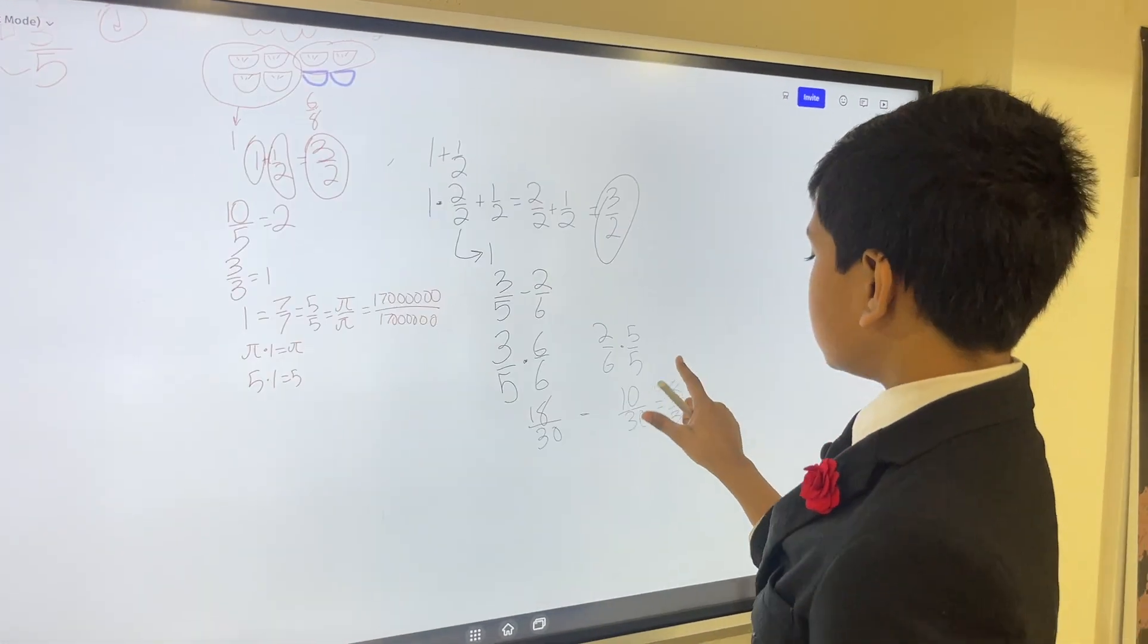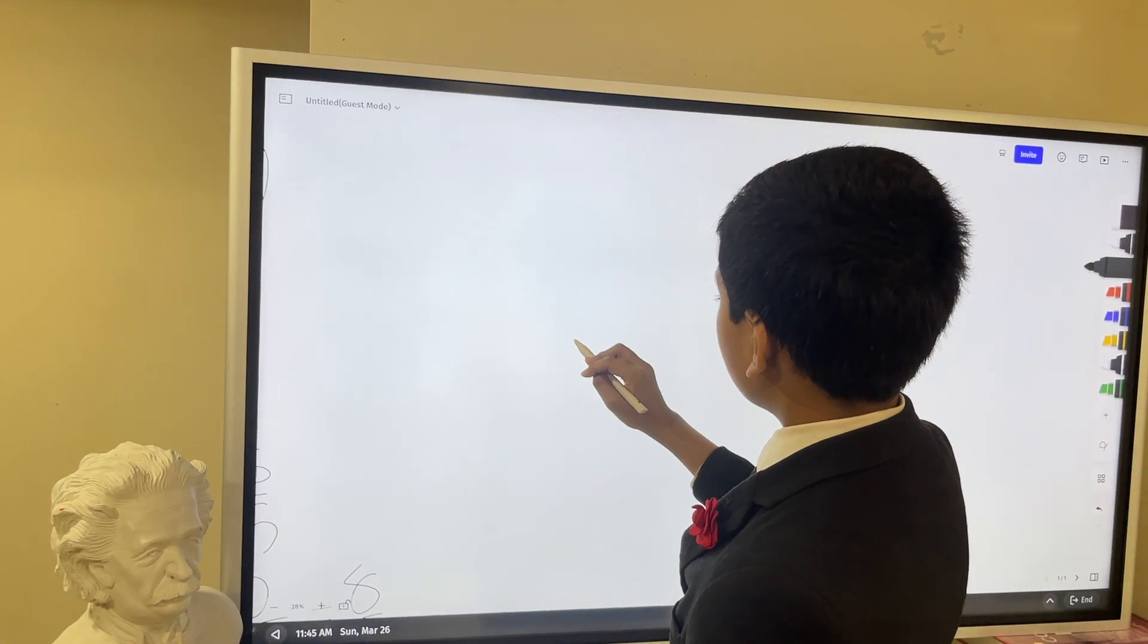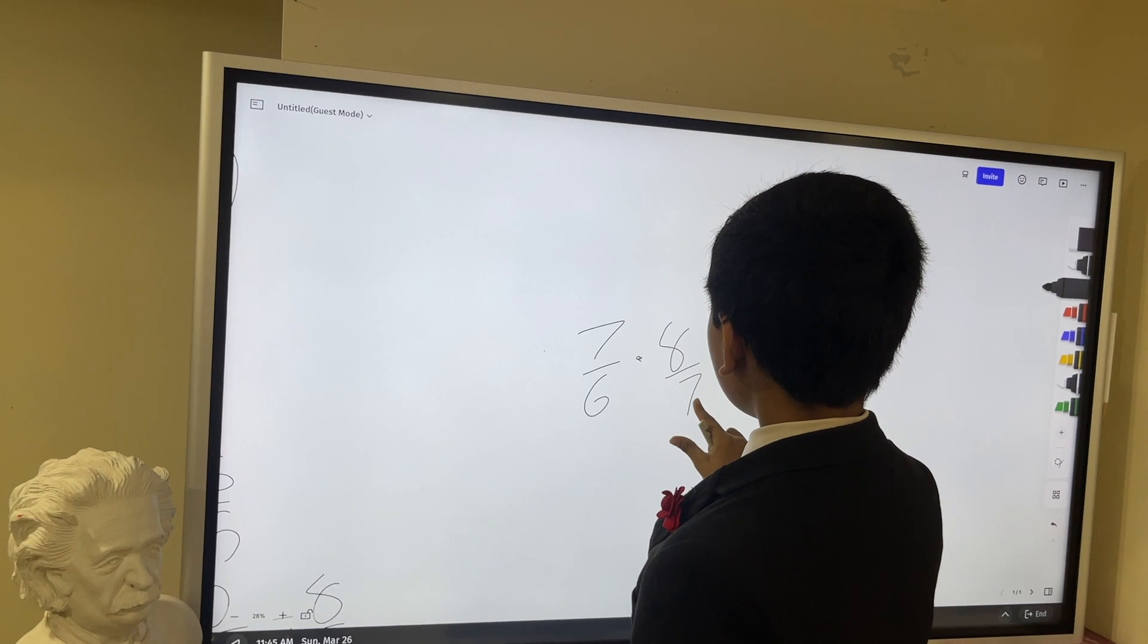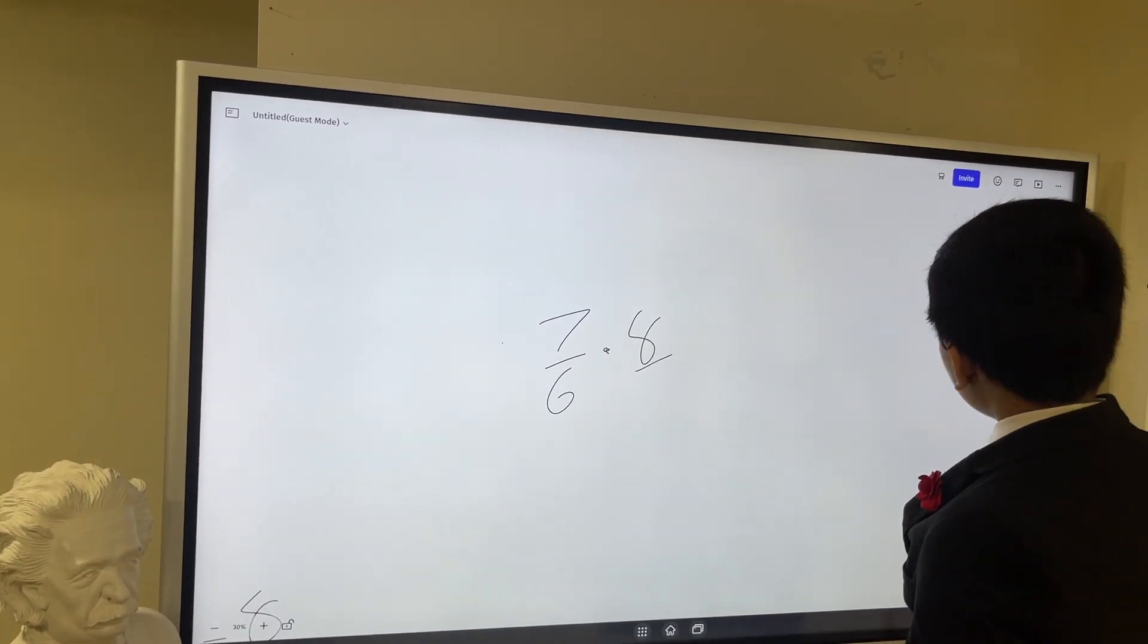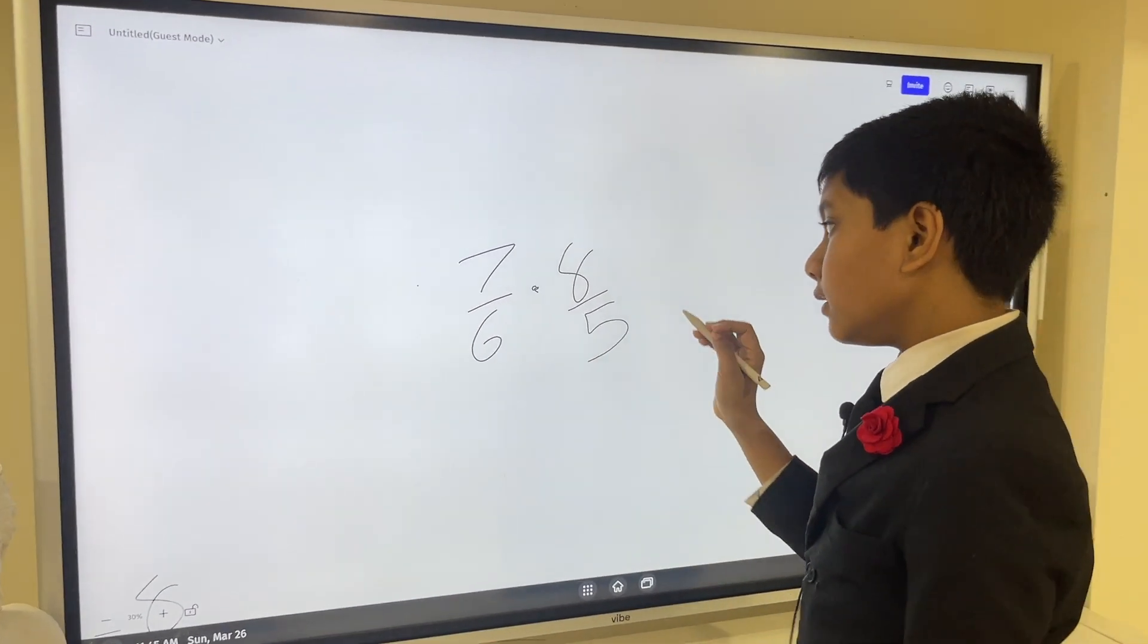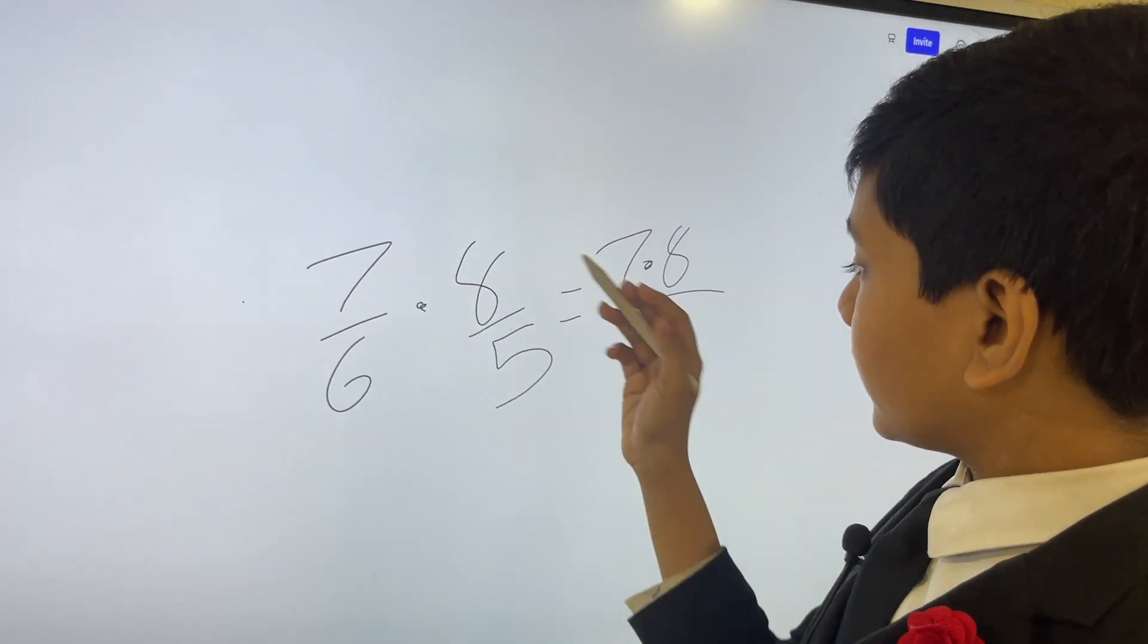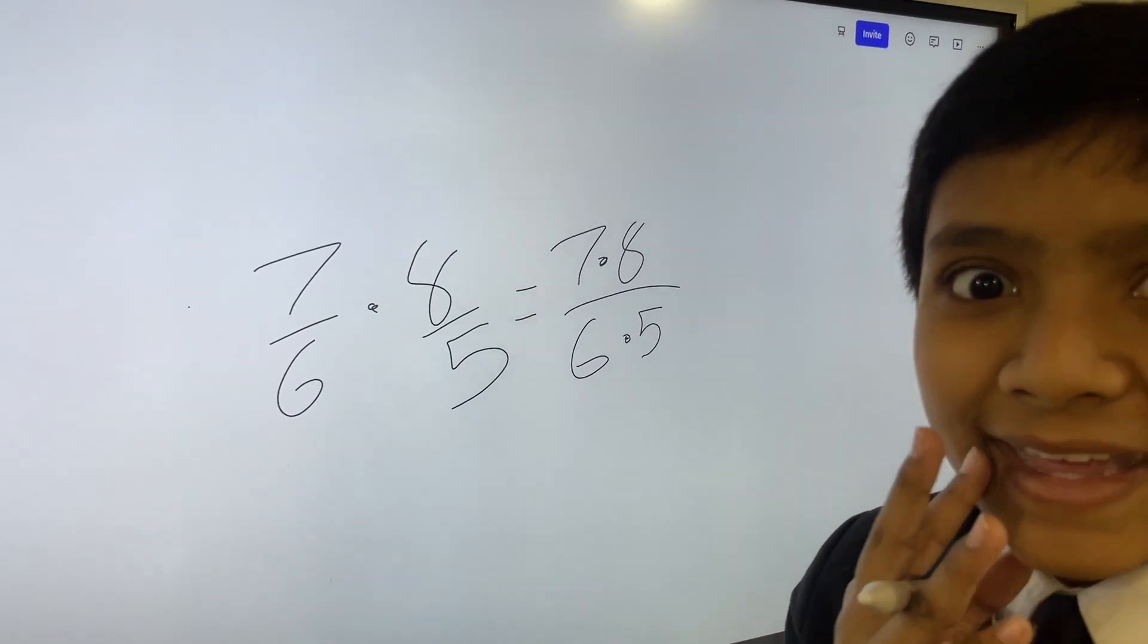So, as you just saw, multiplication on fractions works like this. When you have two fractions multiplied together, it basically becomes the numerator times numerator over the denominator times denominator. Oh, yeah. One more thing, guys.